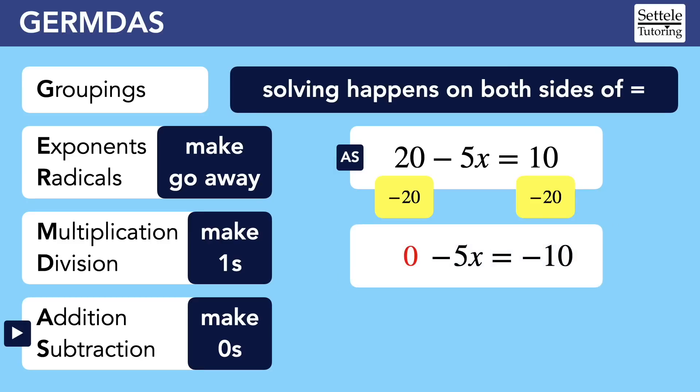I end up with 0 minus 5x equals negative 10. Notice that even though the 20 is attached with subtraction, I did not cancel it out with addition. That's because my goal for addition and subtraction is to make zeros. The equation had a positive 20, so I minus 20 to make 0. And since a 0 in this new equation doesn't do anything, we don't bother writing it.